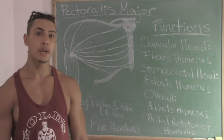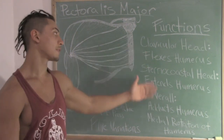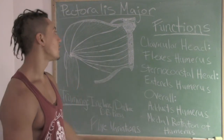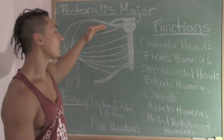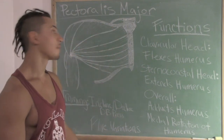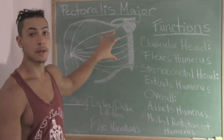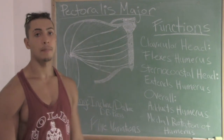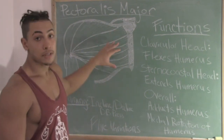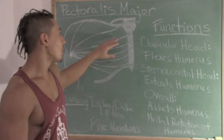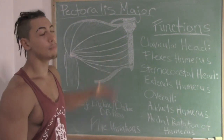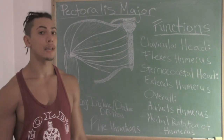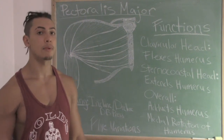Now, if you want to train both the clavicular and the sternocostal head, what would be some good exercises? I'm going to break this down into exercises for the clavicular or upper chest, and exercises for the sternocostal head. We could break the sternocostal head into both middle and lower chest, but realistically if you do any sort of horizontal pressing, your middle chest will be developed — this is usually not a problem.